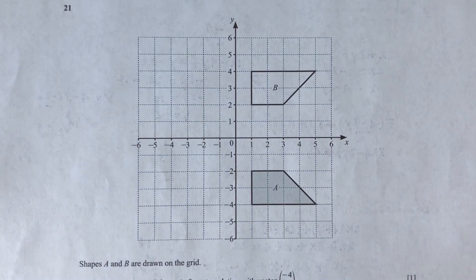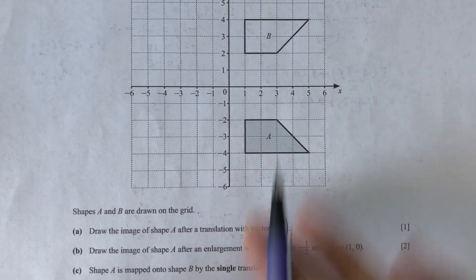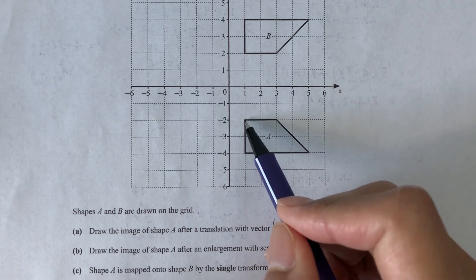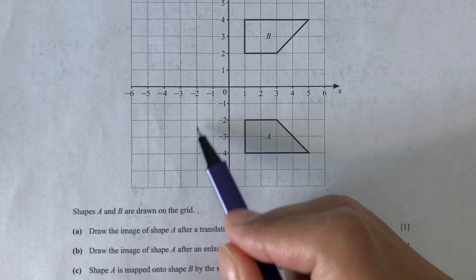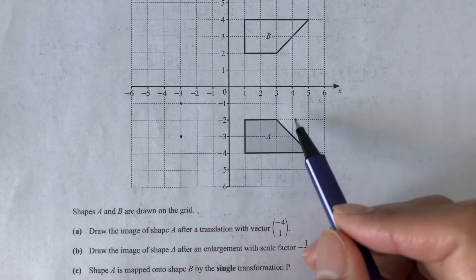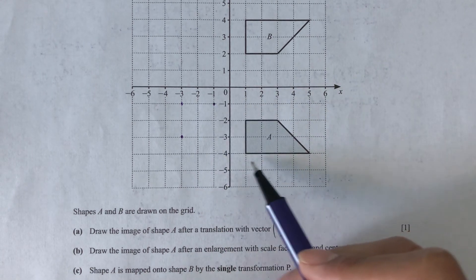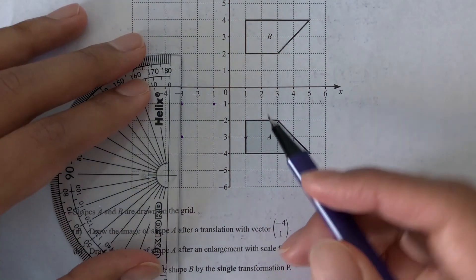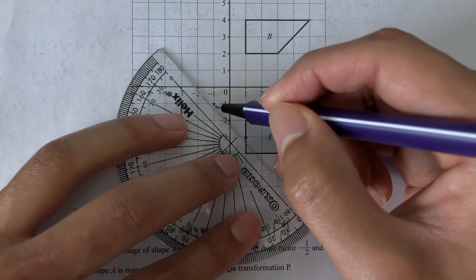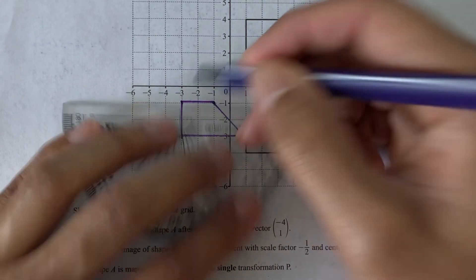Question 21. Shapes A and B are drawn on a grid. Part A: draw the image of shape A after a translation with vector (-4, 1). For each vertex, we move 4 left and 1 up. Applying this to all four vertices and joining the points gives the translated image.